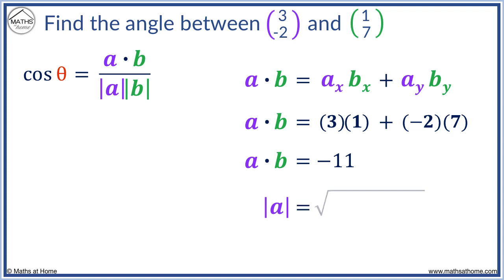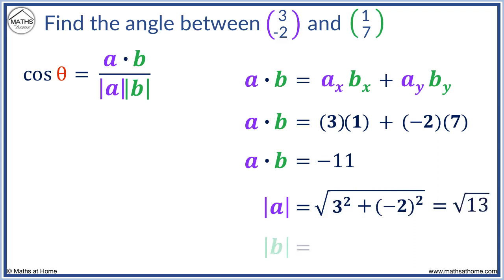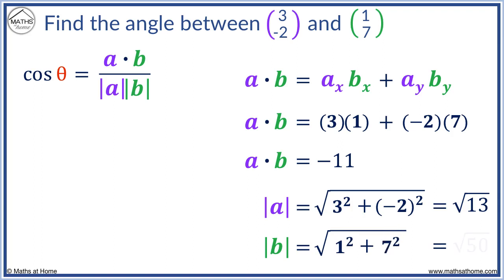To find the magnitude of a we use Pythagoras: the square root of ax squared plus ay squared. Three squared equals nine and minus two squared equals four, so the magnitude of a equals the square root of thirteen. The magnitude of b is found using Pythagoras with vector b: the square root of bx squared plus by squared. One squared equals one and seven squared equals forty-nine, so the magnitude of b equals the square root of fifty.